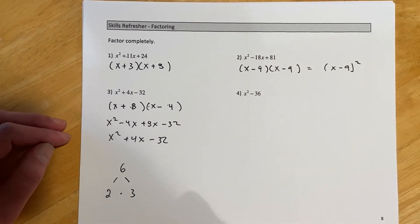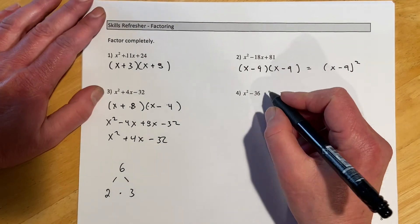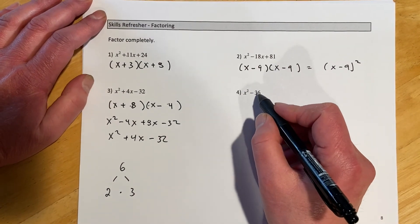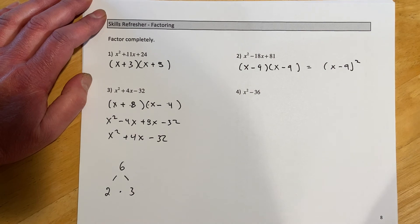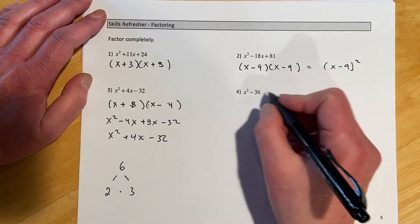This last one, you might remember it's called a difference of squares. So you can just figure out what multiplies to be 36 and adds to be 0 and come up with x plus 6, x minus 6, which will be the answer.